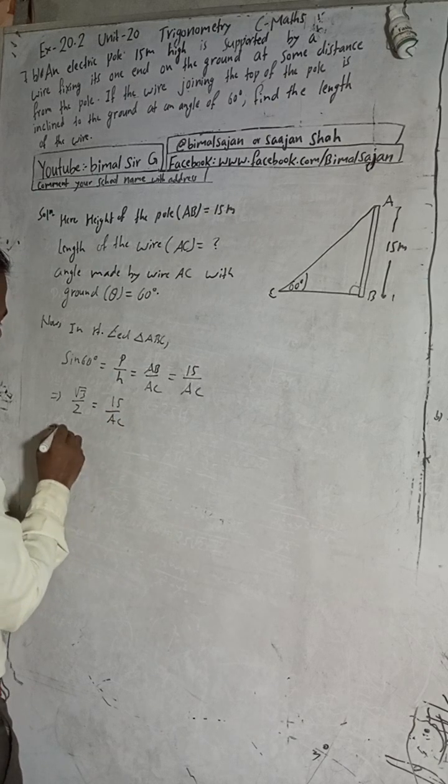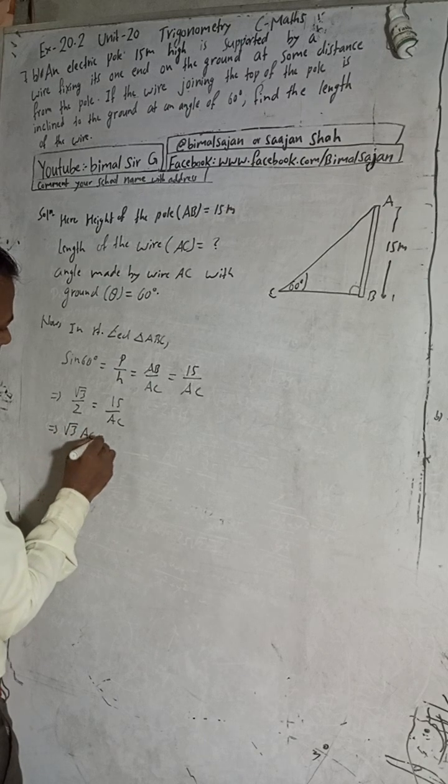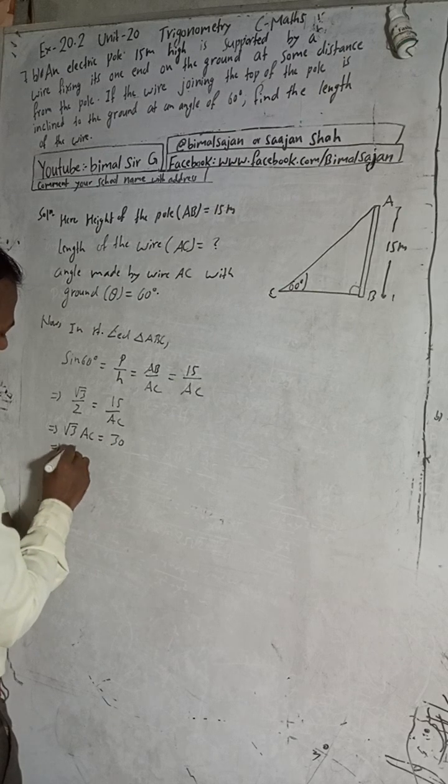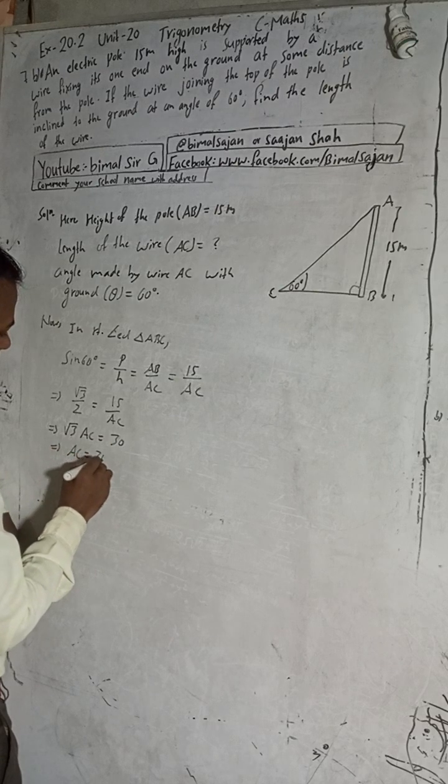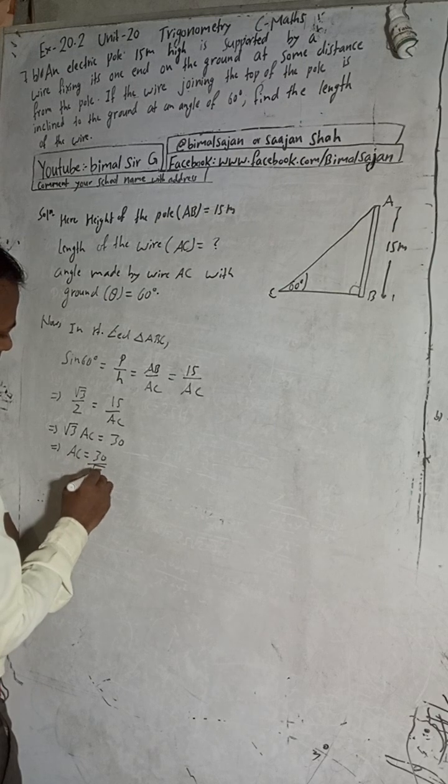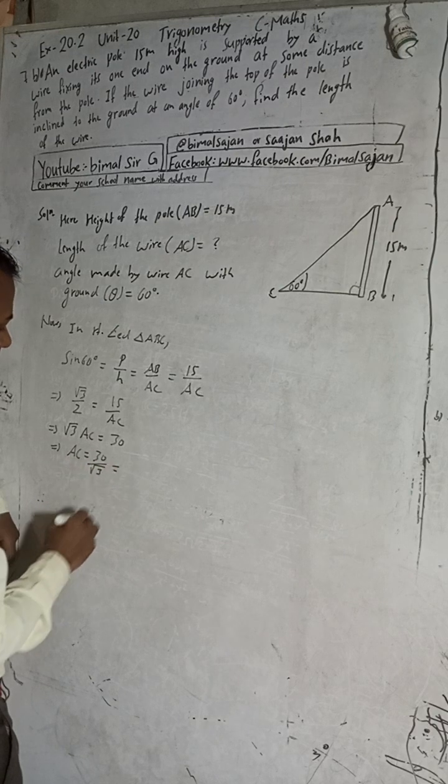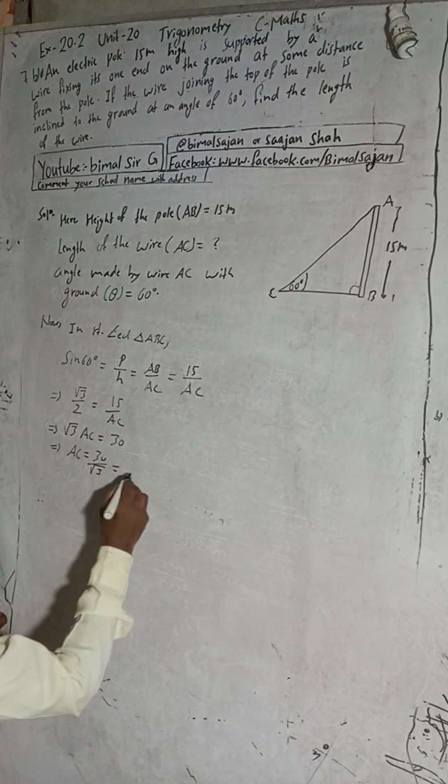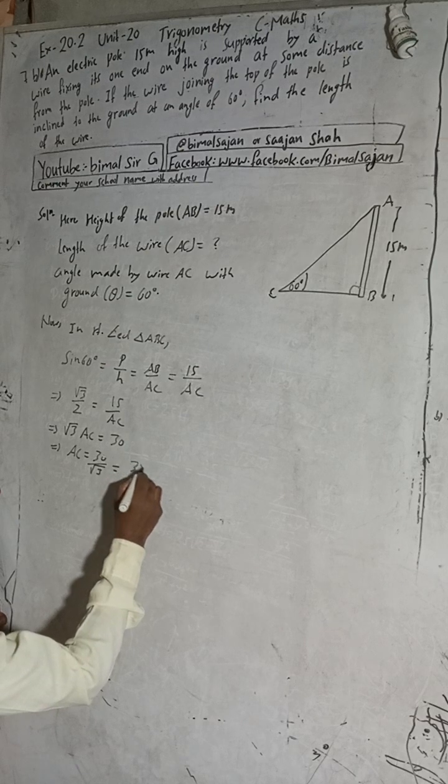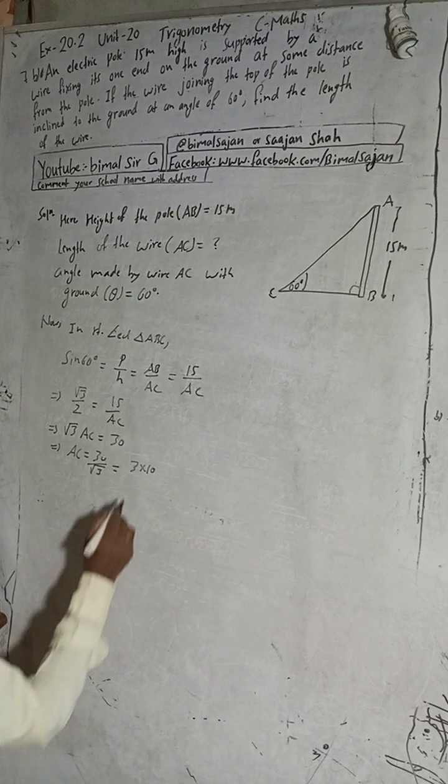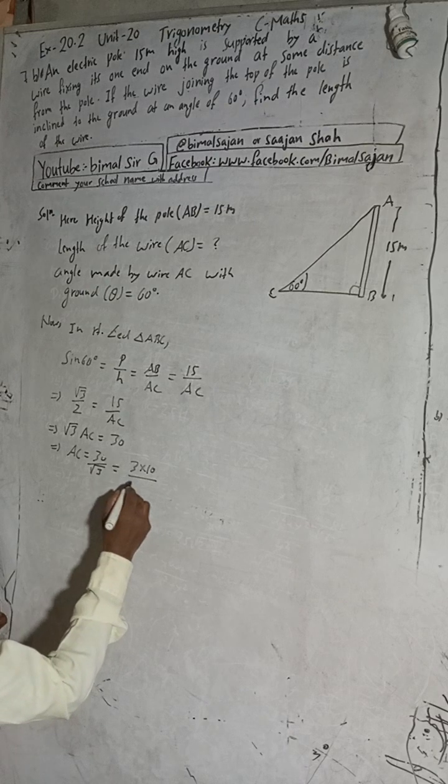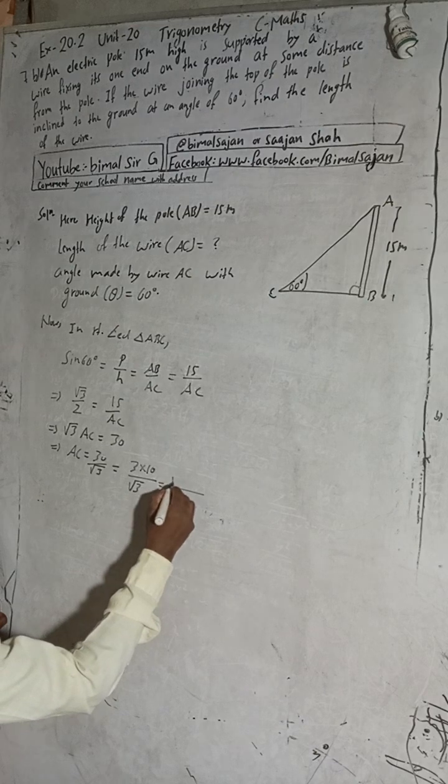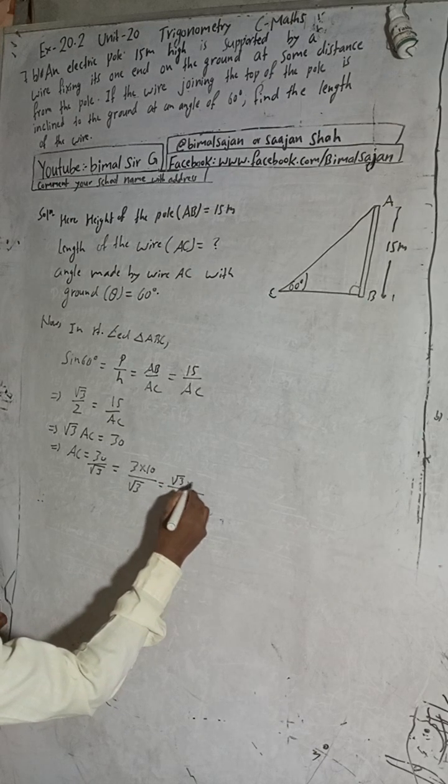Now AC equals 30 by √3. This is the answer but to match the book answer, 30 you can write as 3 times 10, and this √3 can be written as √3. This 3 can be written as √3 times √3 because √3 times √3 is 3.